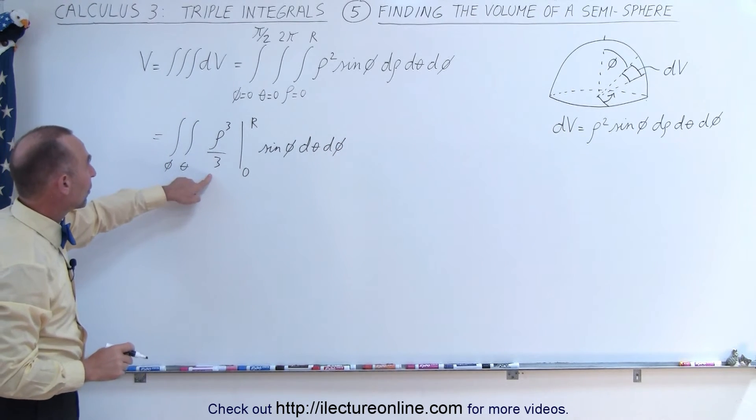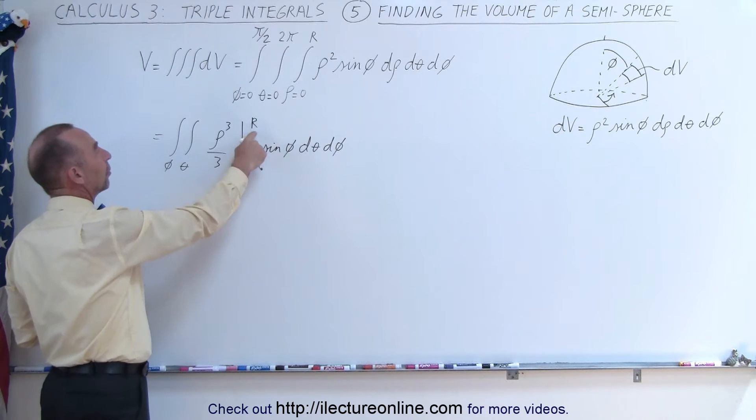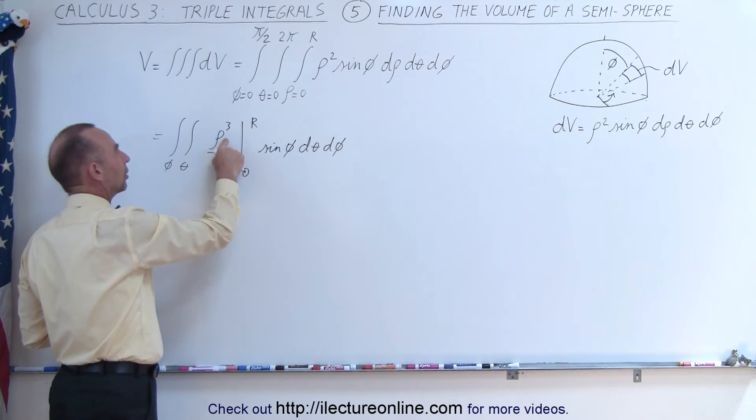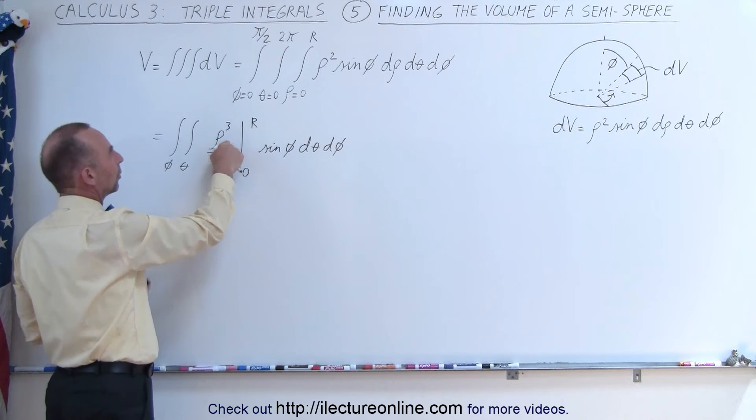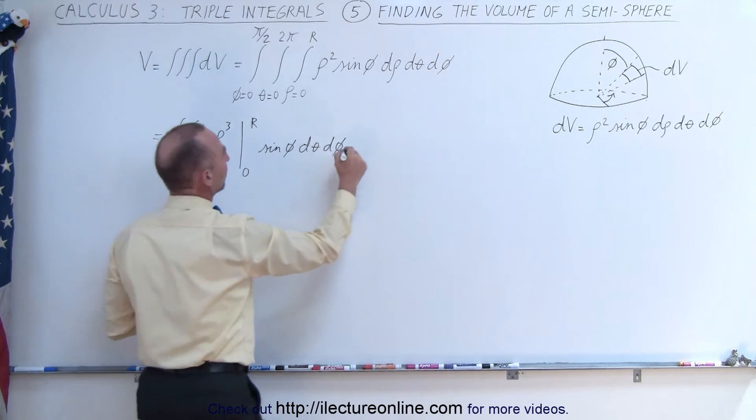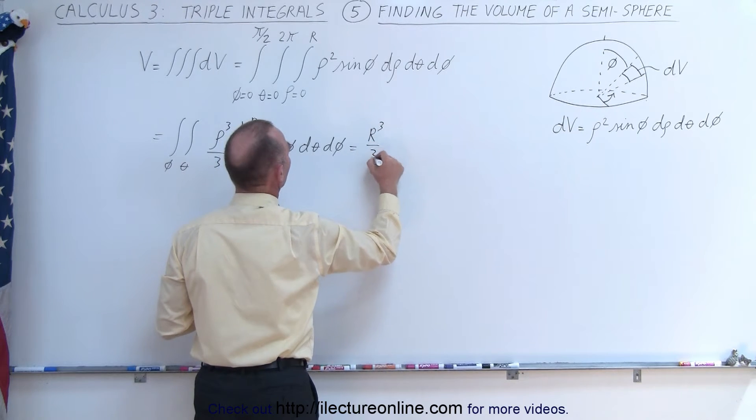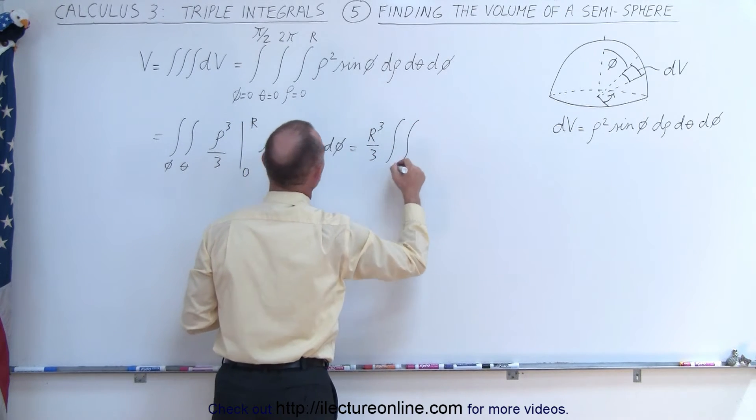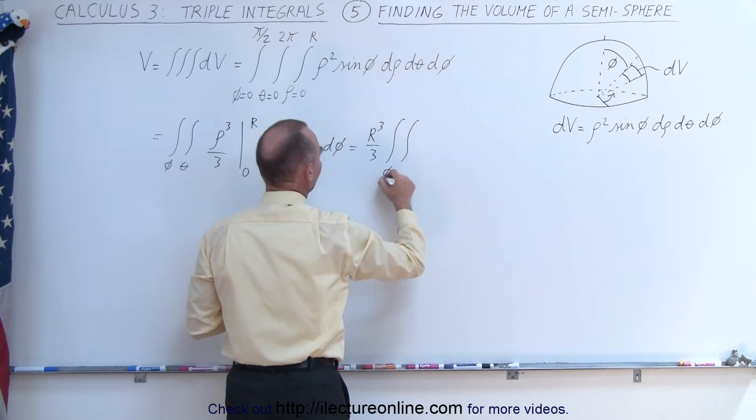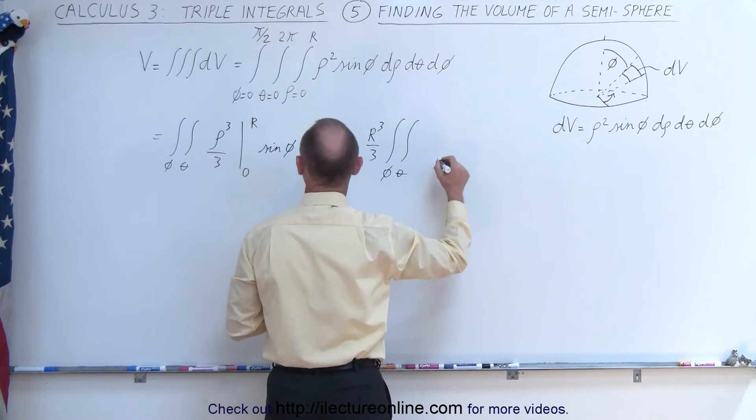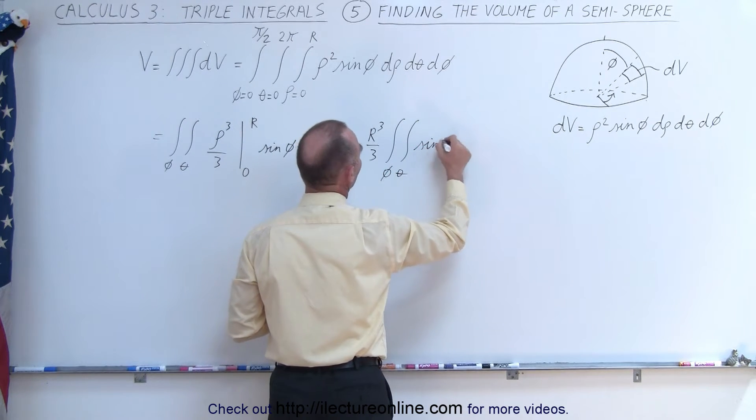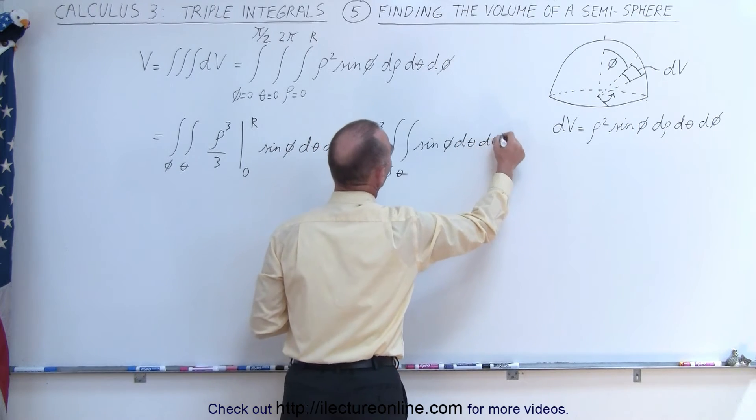So this, when we evaluate, we plug in the upper limit r, that'll be r cubed divided by 3. Plug in the lower limit, you get 0, so this then becomes equal to r cubed divided by 3 times the double integral for phi and theta, and that will give us sine of phi d theta d phi.